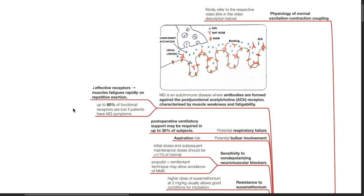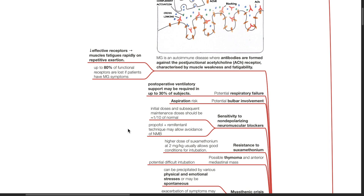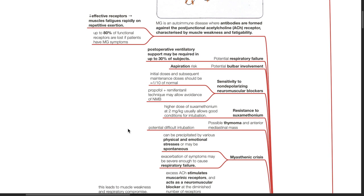There is potential for respiratory failure. Post-operative ventilatory support may be required in up to 30% of subjects. There is potential bulbar weakness with aspiration risk. Patients with myasthenia gravis are sensitive to non-depolarizing neuromuscular blockers. Initial doses and subsequent maintenance doses should be one-tenth of normal. Propofol and remifentanil technique may allow avoidance of neuromuscular blockade.